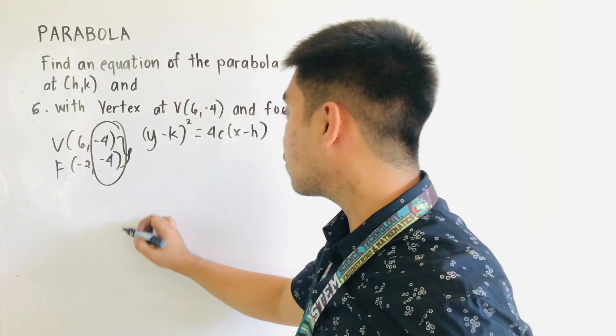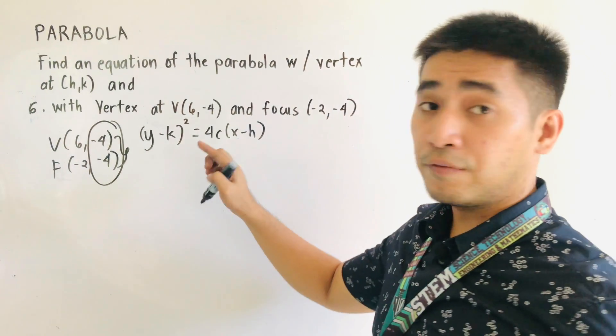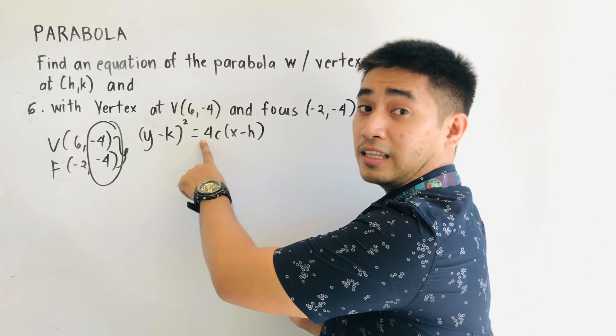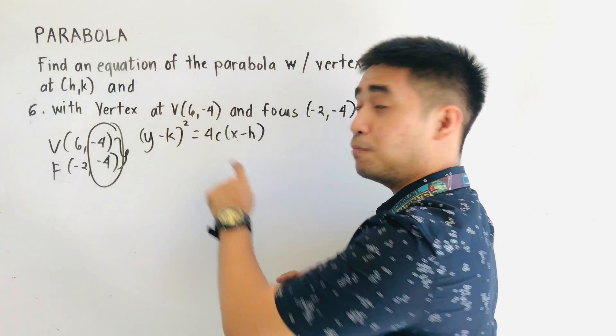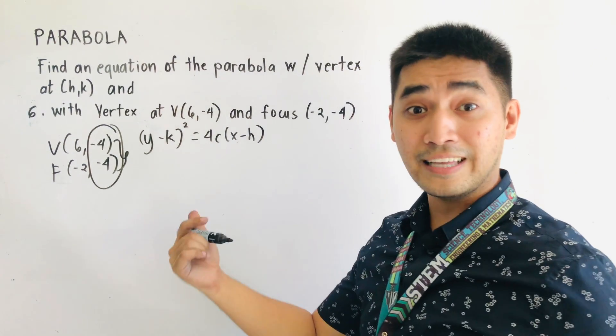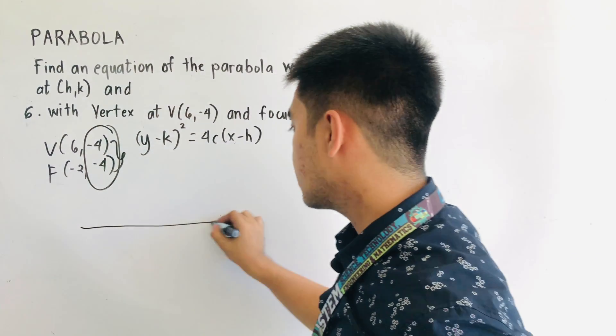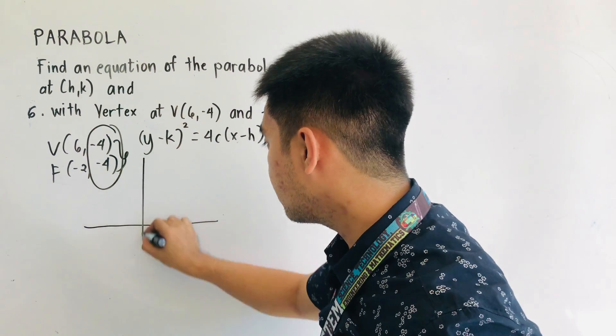So let us first graph. If it is opening to the left, this becomes negative. If it is opening to the right, it is positive. So let us first graph.